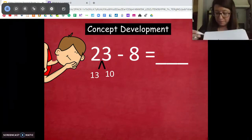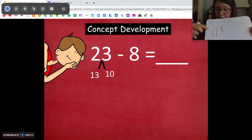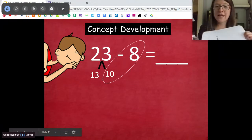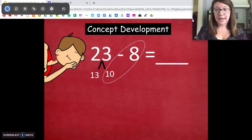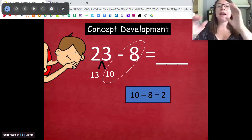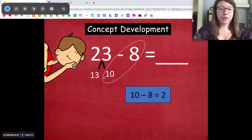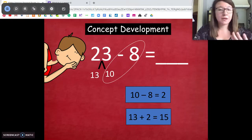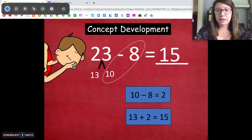Okay? Started with 23. We're going to do our take from 10 strategy. Take out a 10. There's our 10 and our other part is 13. Solve the same way. 10 minus 8 we know is 2. And then we're going to add the 2 to our other part over here, 13. 13 plus 2 is 15. Much easier to solve that way. So our answer is 15.